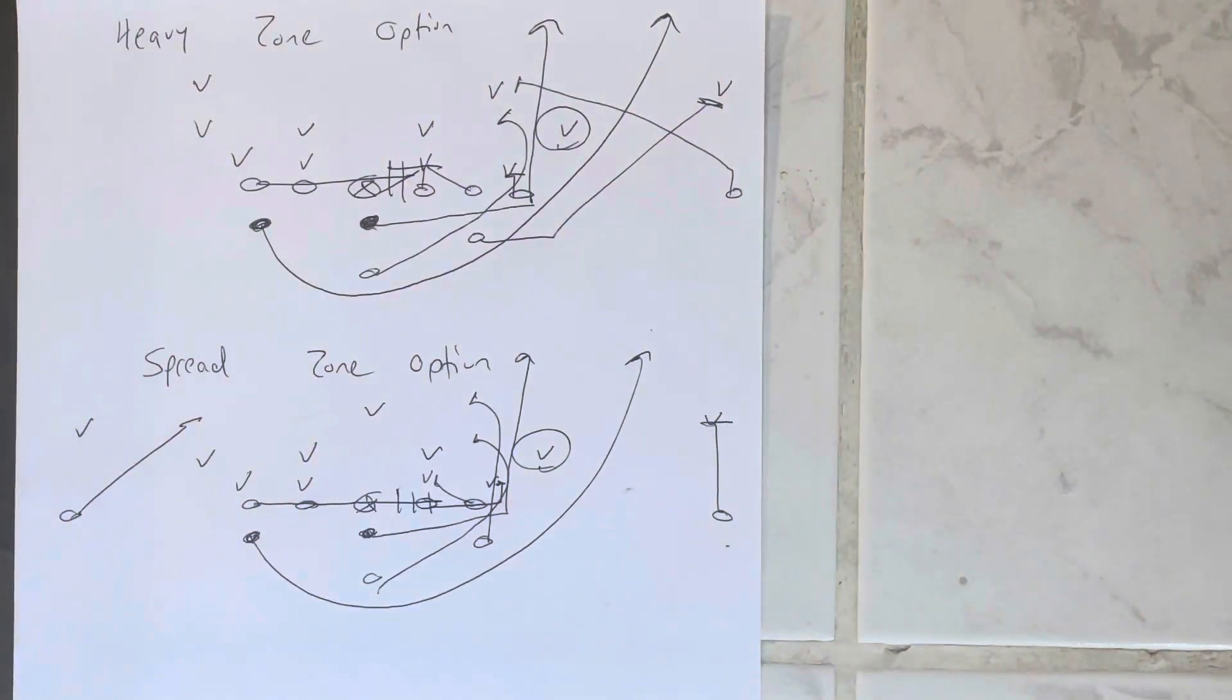But here's the problem, coaches. This is the problem. You have to cross block it. If you get a B-gap defender, a two technique, a three technique, you've got to cross block it. Even with a four-eye tackle's going to block down. That part's not hard. This is the hard part.